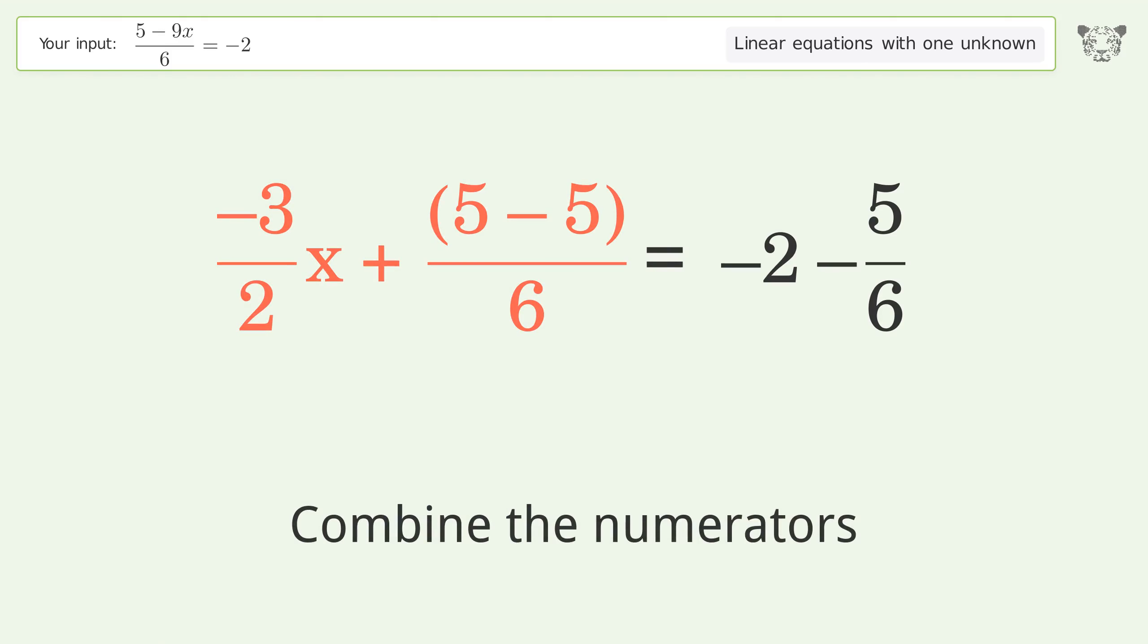Isolate the x. Multiply both sides by the inverse fraction 2 over negative 3.